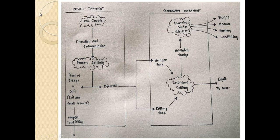This is a flow chart. This box represents primary treatment and this box represents secondary treatment. Primary treatment is physical removal. The raw sewage undergoes physical removal of all debris by two processes — filtration and sedimentation. After that, it is taken to the primary settling tank, where it forms the sludge — primary sludge plus grit, consisting of soil and small pebbles. The effluent from this is the primary effluent.